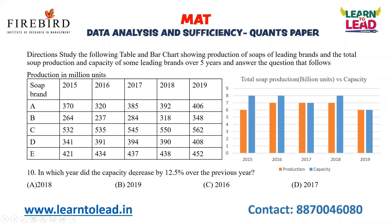In which year did the capacity decrease by 12.5% over the previous year? The capacity in 2016 is 8 billion and in 2017 it is 7 billion, so 1 out of 8 parts has decreased. 1 by 8 is nothing but 12.5 percentage, so in 2017 the capacity has decreased.